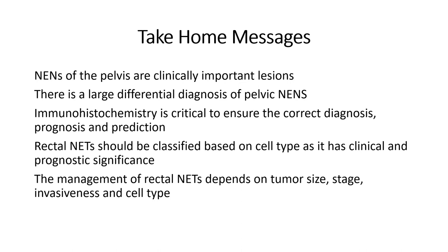Regarding SUV value for diagnosis by gallium-68 DOTATATE scan: the SUV is a measure of the intensity of uptake — higher is better. We generally use the Krenning score of 1, 2, 3, 4, and like to see at least a score of 3 to 4 to make it potentially of value for PRRT. Scores beyond that don't help for other therapies such as surgery. Even if you have a low SUV, it doesn't necessarily mean it's negative — it just means PRRT is not going to be as likely to work as intended.